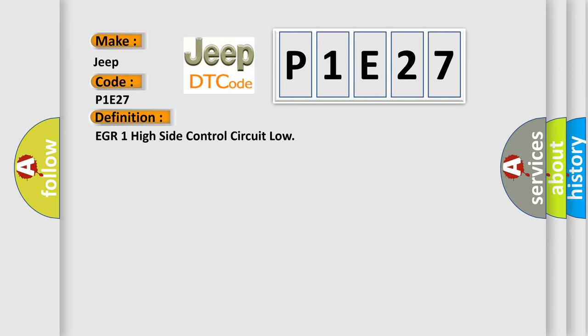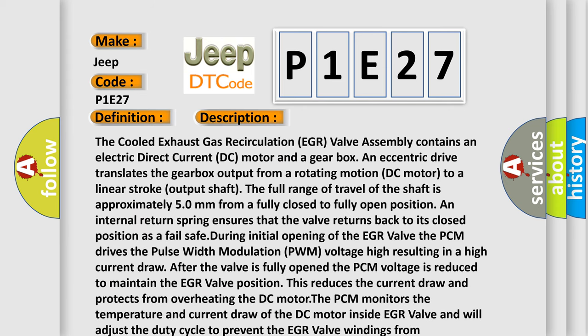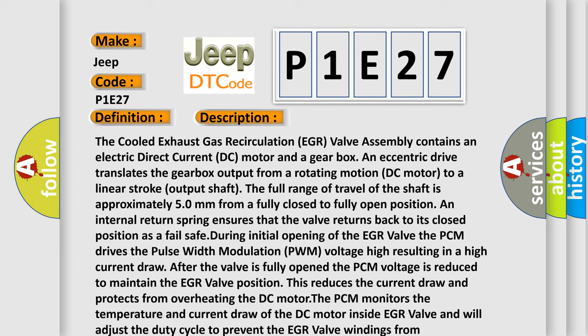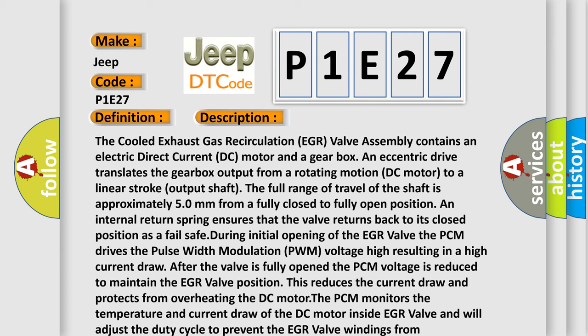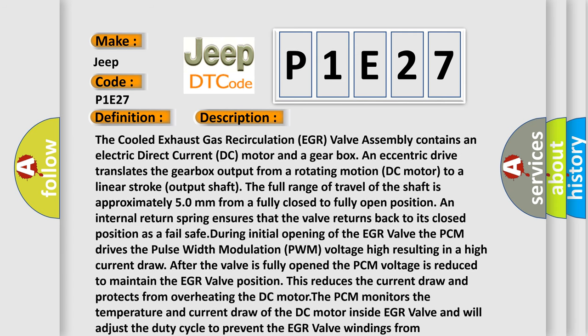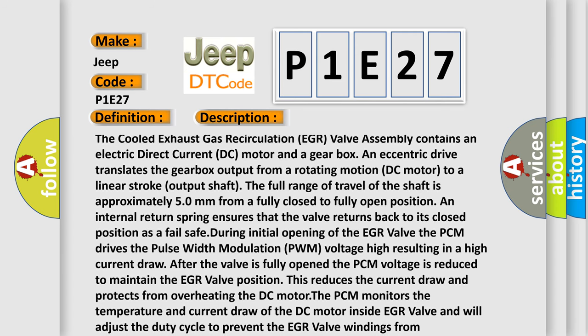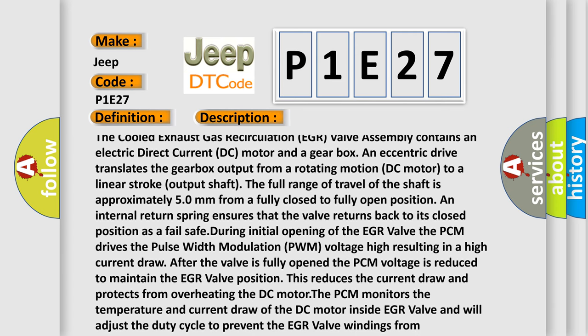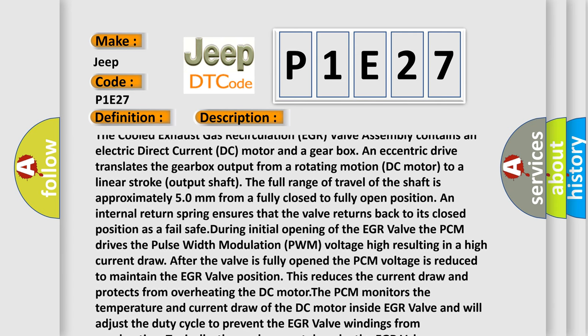And now this is a short description of this DTC code. The cooled exhaust gas recirculation EGR valve assembly contains an electric direct current DC motor and a gearbox. An eccentric drive translates the gearbox output from a rotating motion DC motor to a linear stroke output shaft. The full range of travel of the shaft is approximately 50 mm from a fully closed to fully opened position.